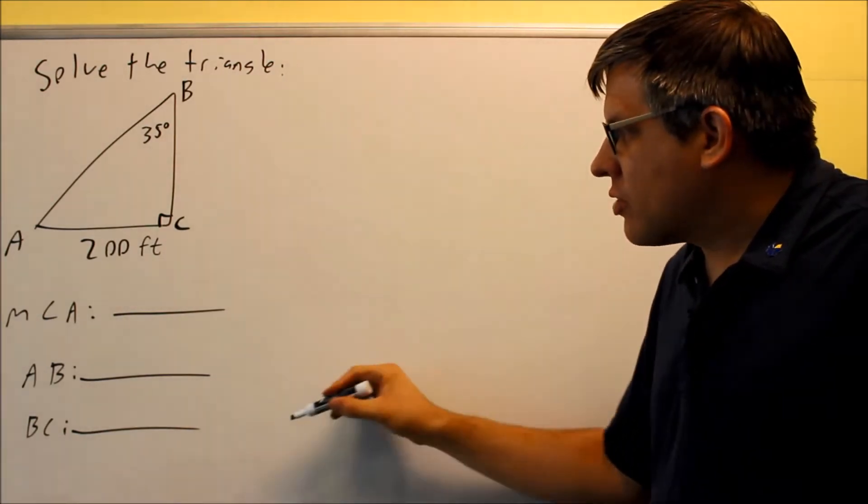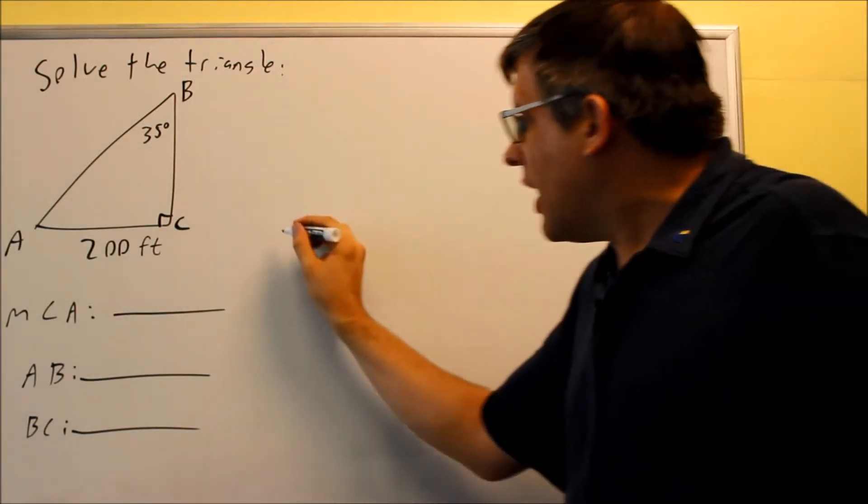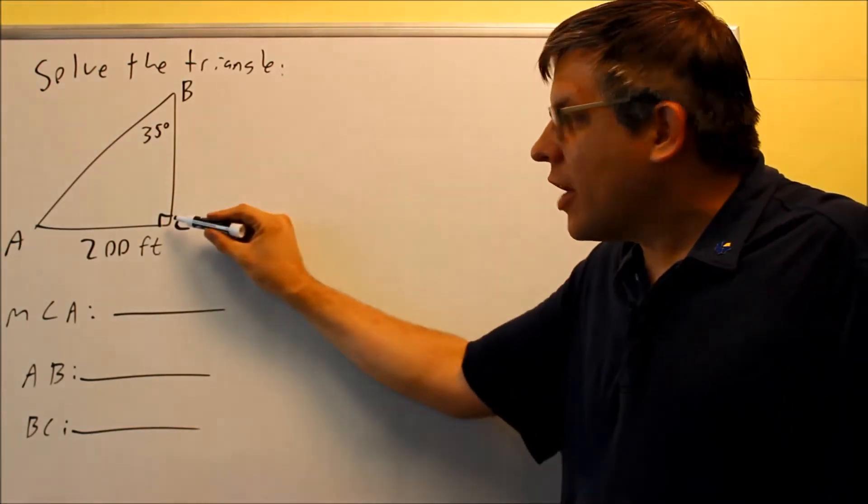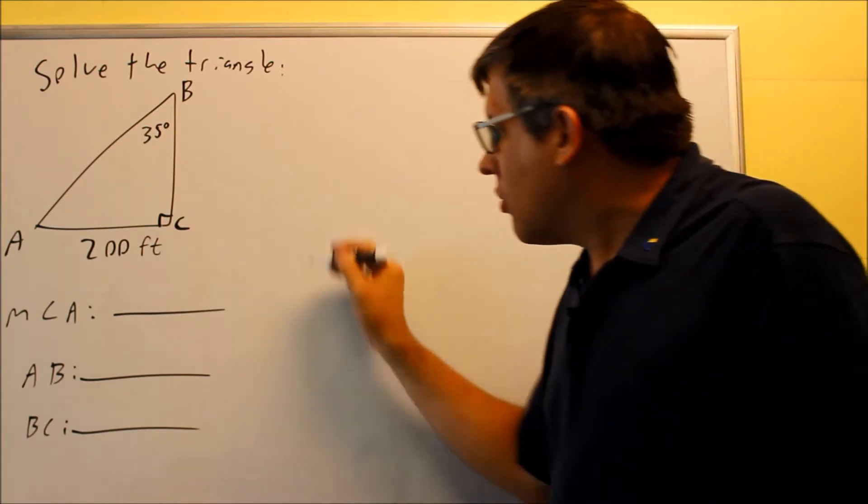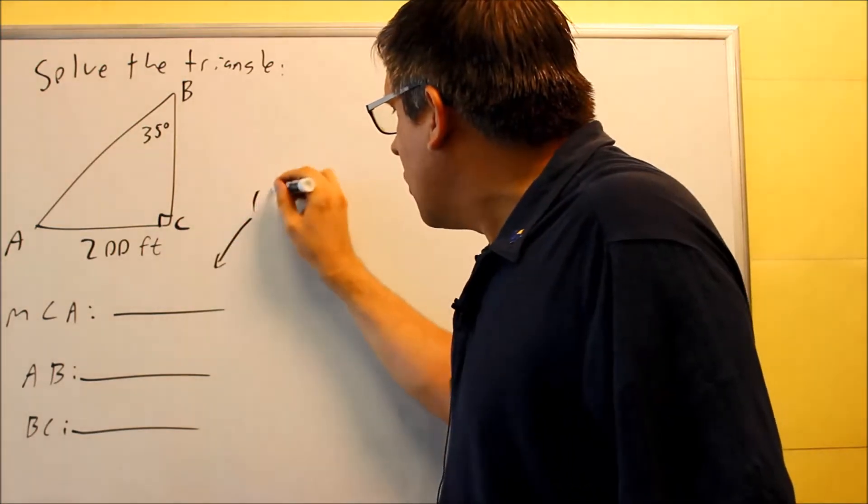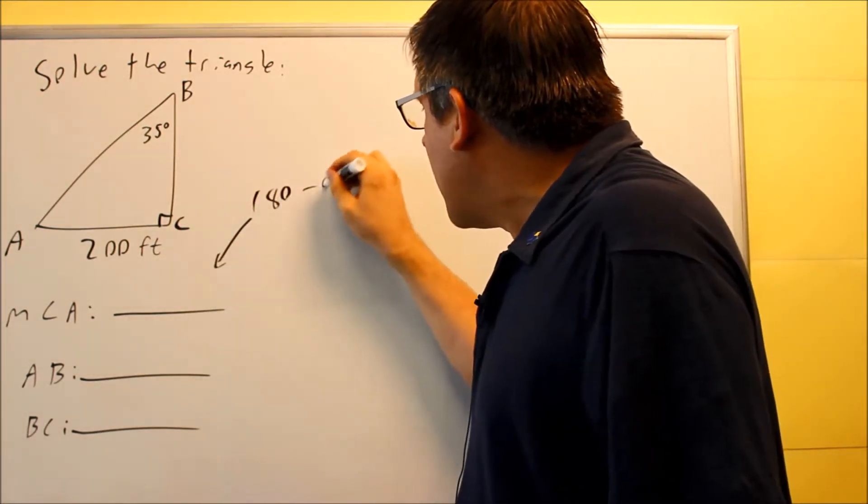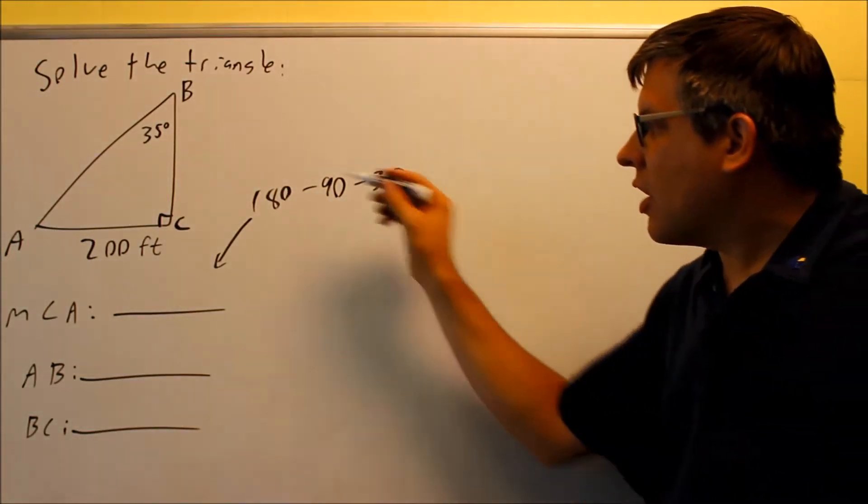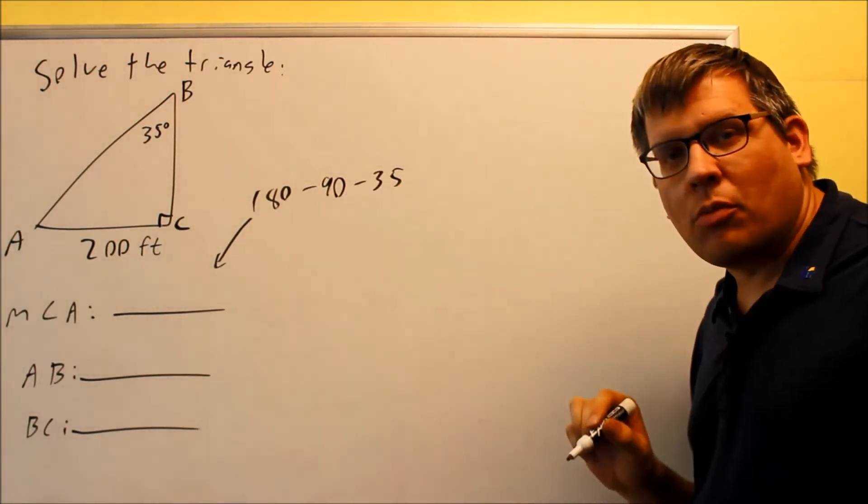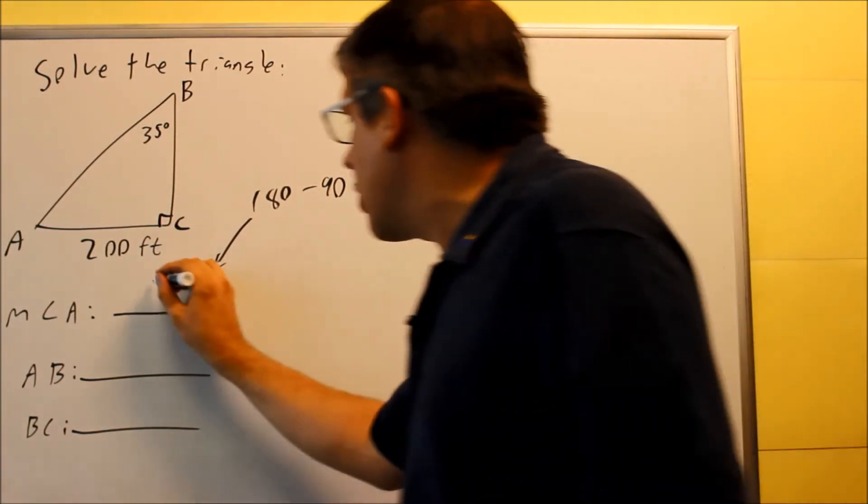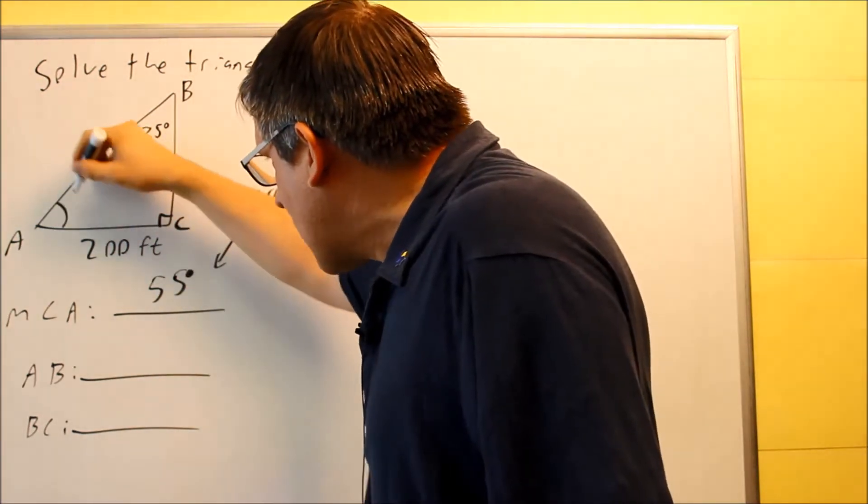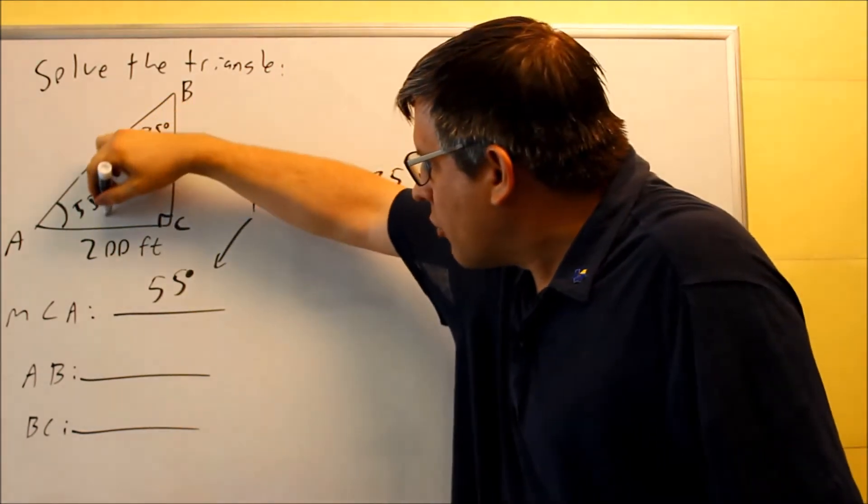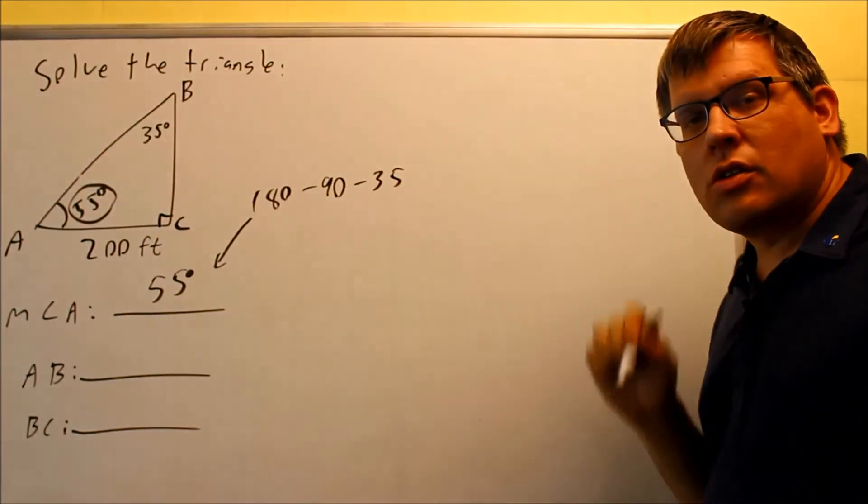To find the measurement of angle A, we know that all angles inside the triangle must add up to 180. We already have 90 degrees and 35 degrees. So to find this one, we do 180 minus 90 minus 35, which gives us 55 degrees. That's the angle that wasn't originally given to us inside the triangle.